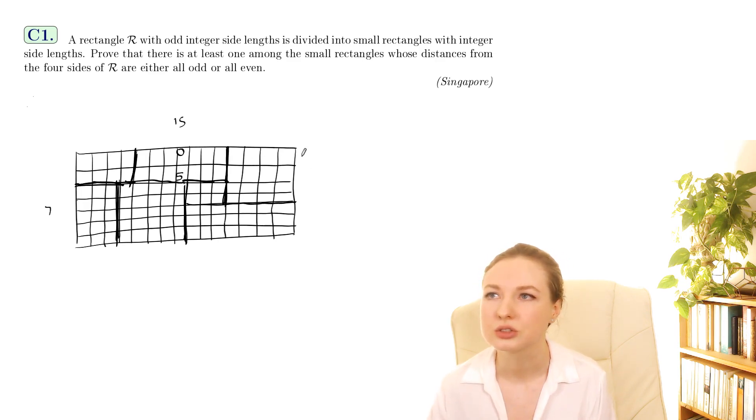Distance to this side is just four and distance that side is four as well. So that's what it means about the distance from the four sides. Now we want them to be either all odd or all even so we've got even even even odd so that's not one of the small rectangles that it's talking about here.